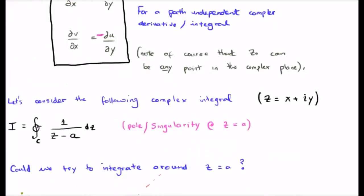In order to motivate the Cauchy integral formula, I'd like to consider the following complex integral. We're going to say the integral is equal to the closed contour integral in an anti-clockwise direction of 1 divided by z minus a, integrated dz.